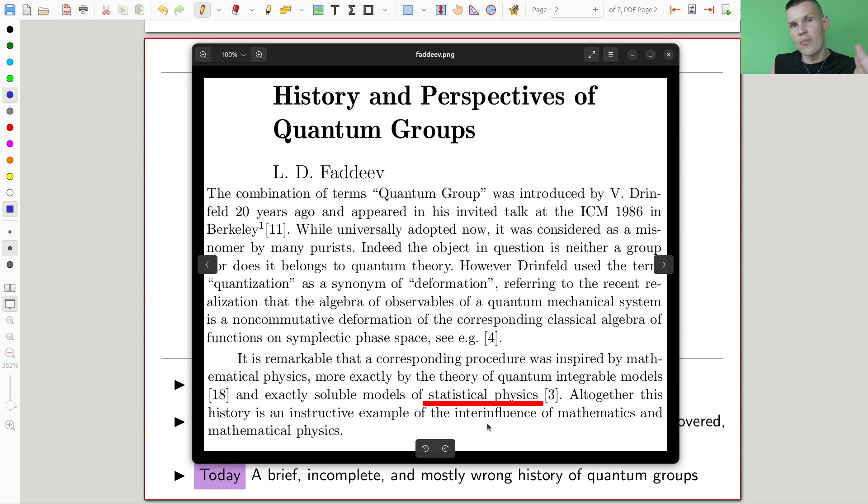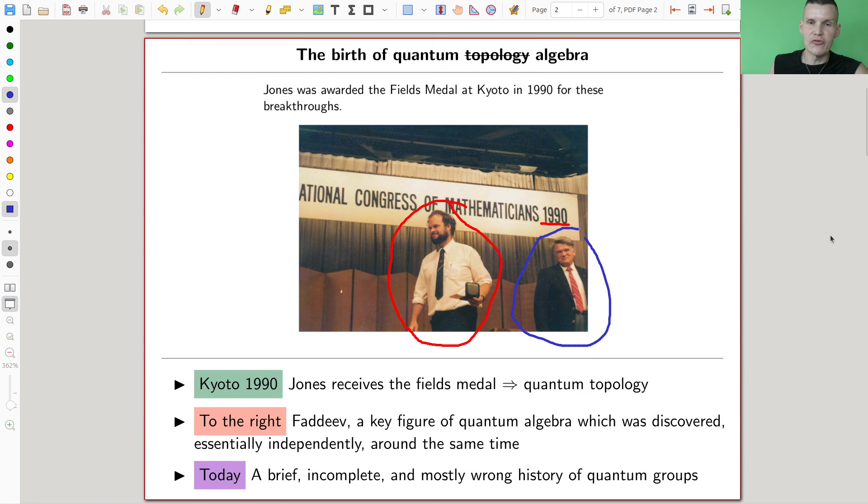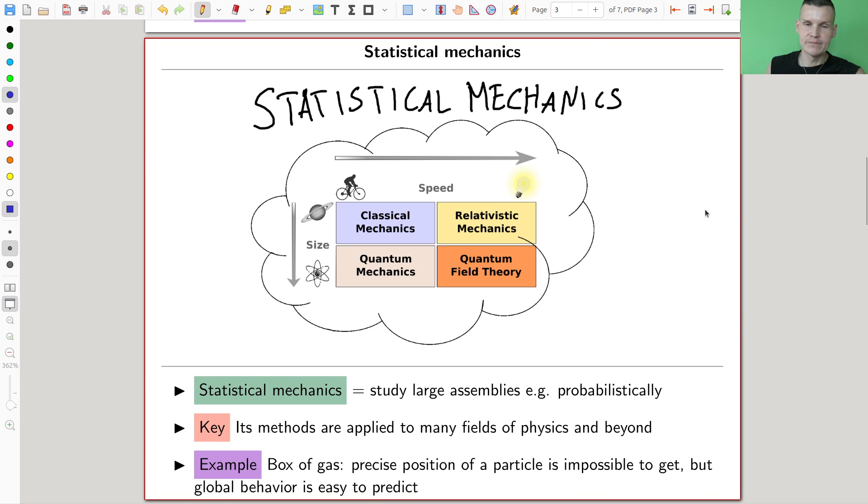And the point here where the history starts is Fadeyev says, well, at least our perspective of quantum groups came from statistical mechanics, or as it's called here, statistical physics, whatever you want to call it. So that's the story. I finally learned who is the second person in the picture, and this motivates to talk a little bit about quantum algebra.